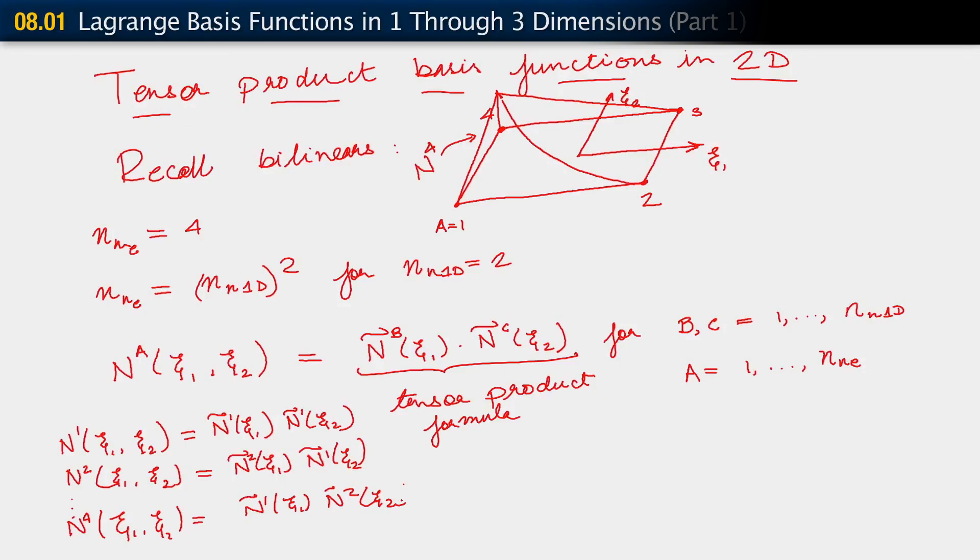You recall we did indeed look at the bilinear case. Now when we go on to basis functions of higher order, all we need to do is to go back to the 1D construction and figure out what order we need to have there. The order in 1D that we need in order to construct basis functions in 2D is simply the square root of the degrees of freedom we want to have in 2D. So we construct those 1D basis functions and then form the tensor product with them.